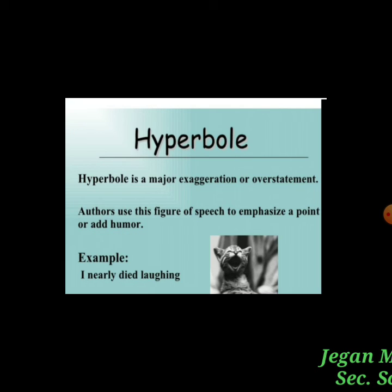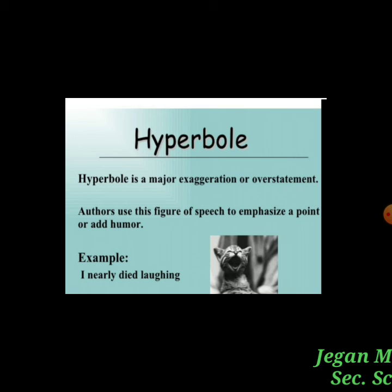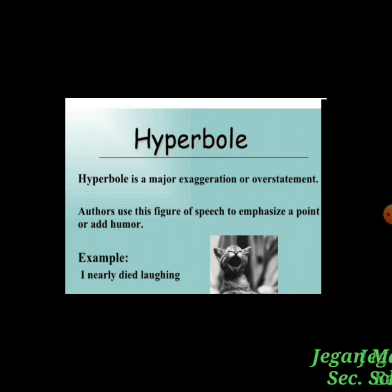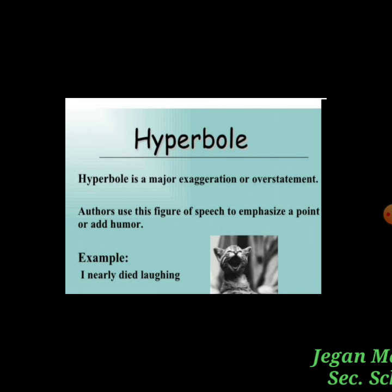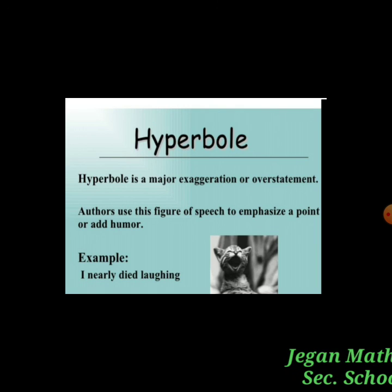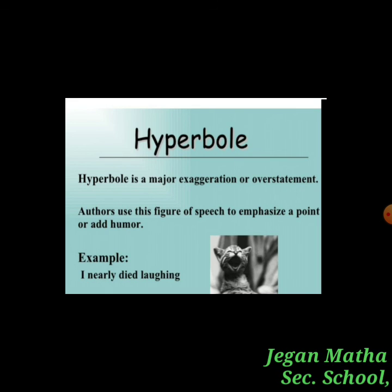Next is hyperbole. A hyperbole is a major exaggeration or overstatement. Authors use this figure of speech to emphasize a point or add humor. If an overstatement is given in the poem lines, it is called hyperbole. For example: 'I nearly died laughing' — 'I nearly died' is an overstatement, so it is a hyperbole.